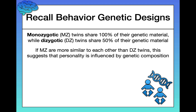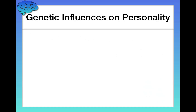The idea is this: if monozygotic twins are more similar to each other in personality than dizygotic twins, this suggests that personality is influenced by genetic composition. And if monozygotic twins reared apart are more similar in their personalities than dizygotic twins reared apart, that again points to a genetic influence. Estimating the extent to which genetics influence personality can be a challenge, in part because twins share not only genetics but also their environment — the same people raising them, the same house, the same school. So how can we disentangle genetic influences from the effects of a shared environment?